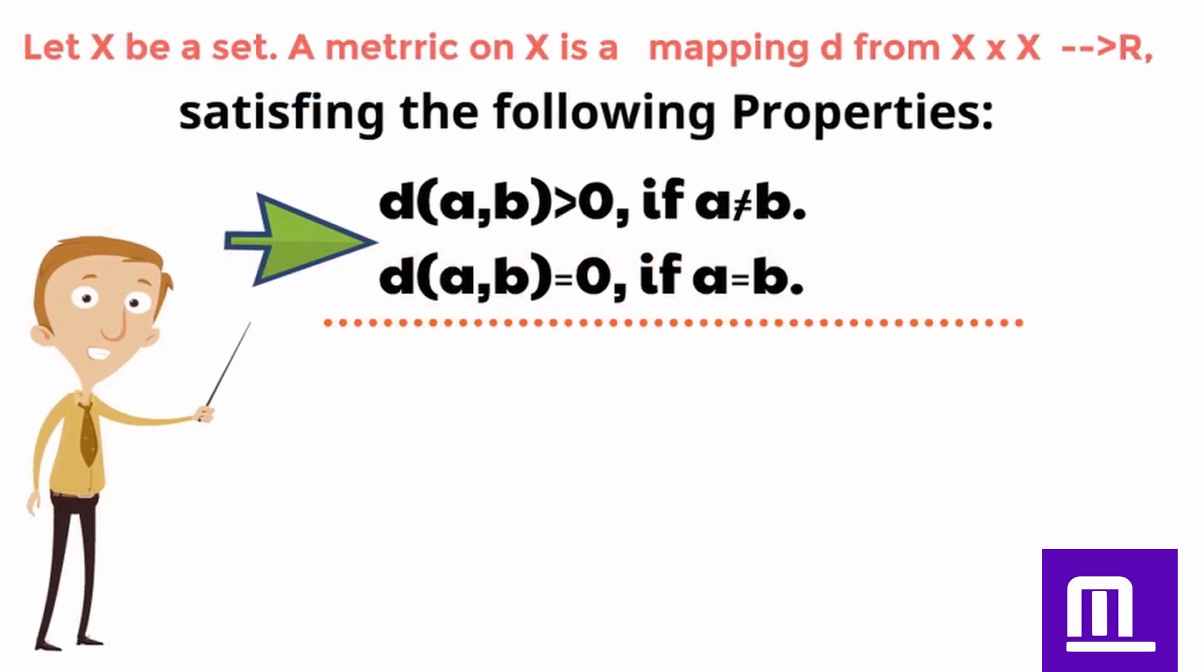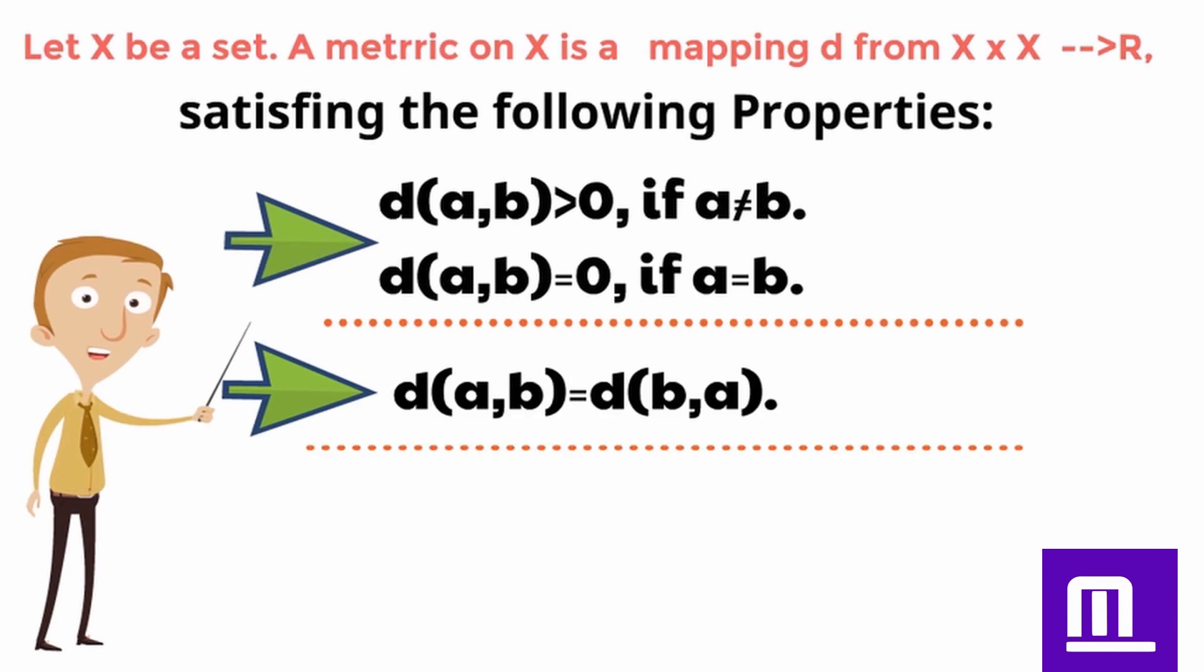1. d of a comma b is greater than 0 if a is not equal to b. d of a comma b equals 0 if a equals b. 2. d of a comma b is equal to d of b comma a.